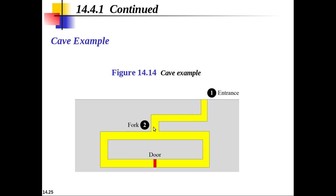After Alice disappears into the cave, Bob moves from point one to point two — the fork — and asks Alice to come out from either the left side or the right side. This corresponds to sending the challenge c. Alice must appear from the requested side to prove she knows the magic word. If Alice knows the magic word, she can come out from the requested side. This game is repeated many times, and Alice wins if she passes the test every time. If she doesn't come out from the requested side, authentication is not granted.